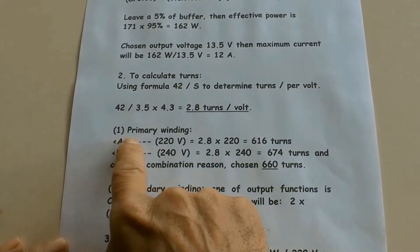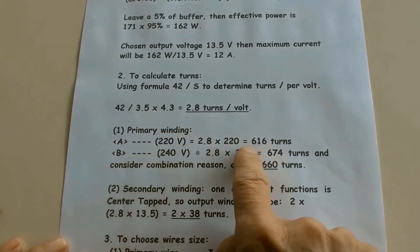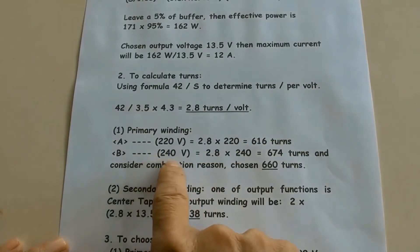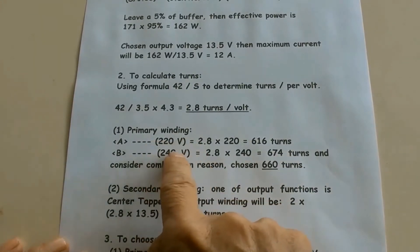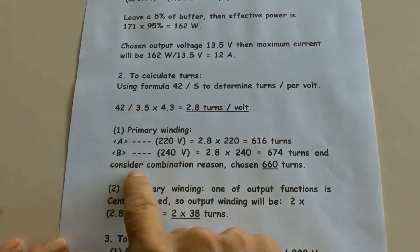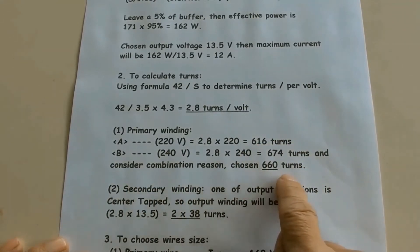Primary winding: for 220 V equals 2.8 times 220 equals 616 turns. For 240 V equals 2.8 times 240 equals 674 turns. For 220 V equals 616 turns. Considered a few good reasons, chosen 660 turns.